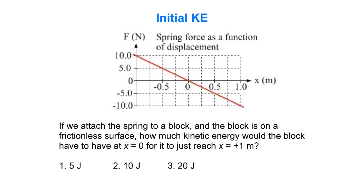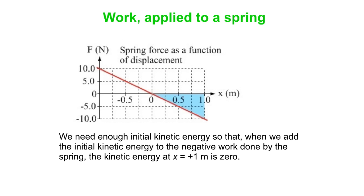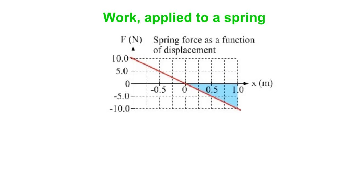This graph can be very helpful. So what you want to think about is that the work is the area under the force versus position graph. So what we need is enough initial kinetic energy so that when we add that kinetic energy to the negative work done by the spring on the block, then the kinetic energy at x is 1 is 0. Then it'll come to rest and we'll be fine.